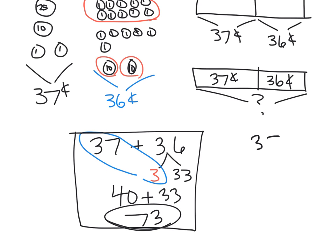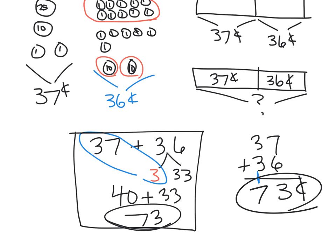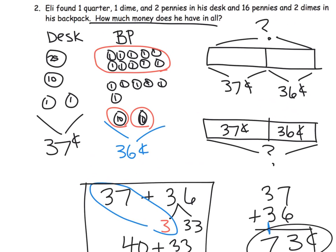Or of course they can stack it up: 37 plus 36. Then they could add — seven ones plus six ones gives us 13 ones, so that's three in the ones column plus an extra 10 in the tens column. And then three tens plus three tens plus one more 10 gives us seven tens. So we have 73 cents. Either way, we're going to end up with the answer of 73 cents total.